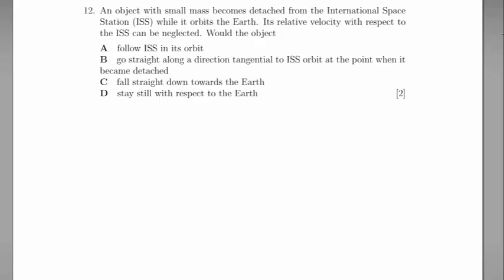Question number 12. An object with small mass becomes detached from the International Space Station while it orbits the Earth. Its relative velocity with respect to the ISS can be neglected.